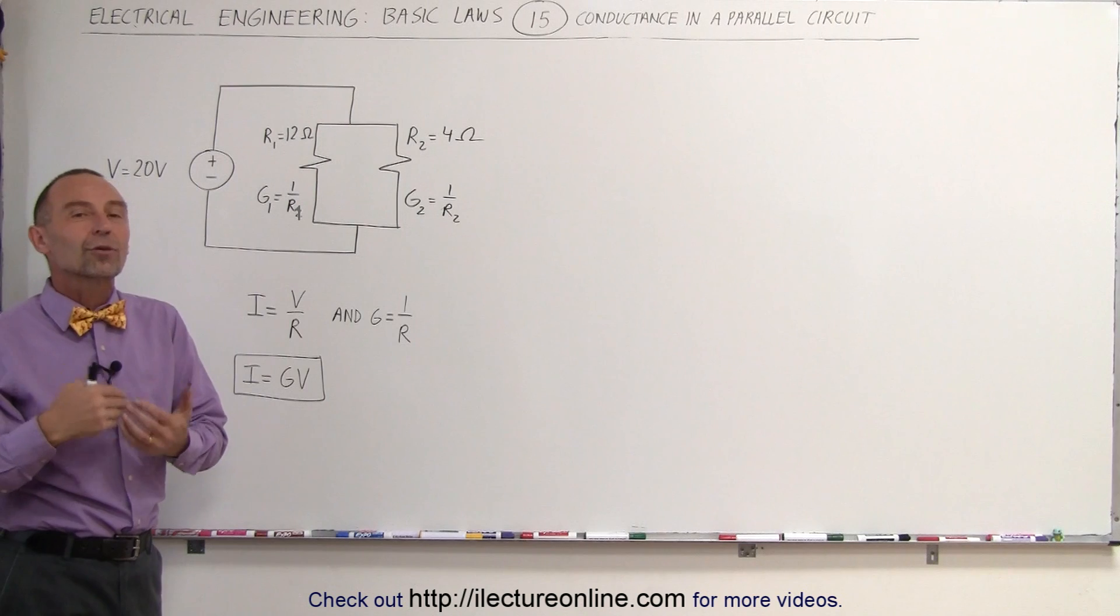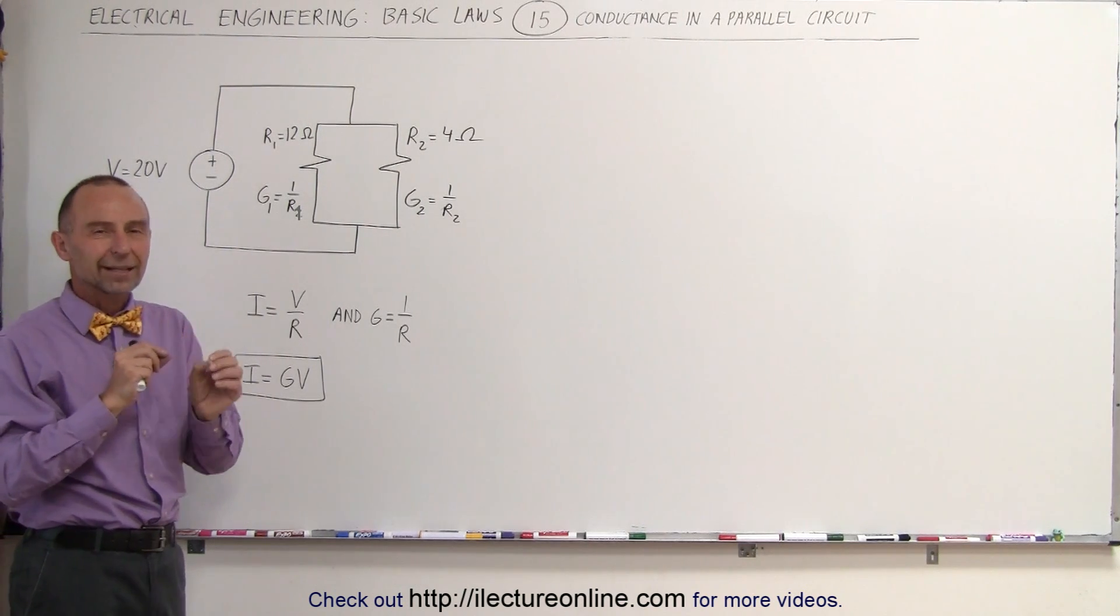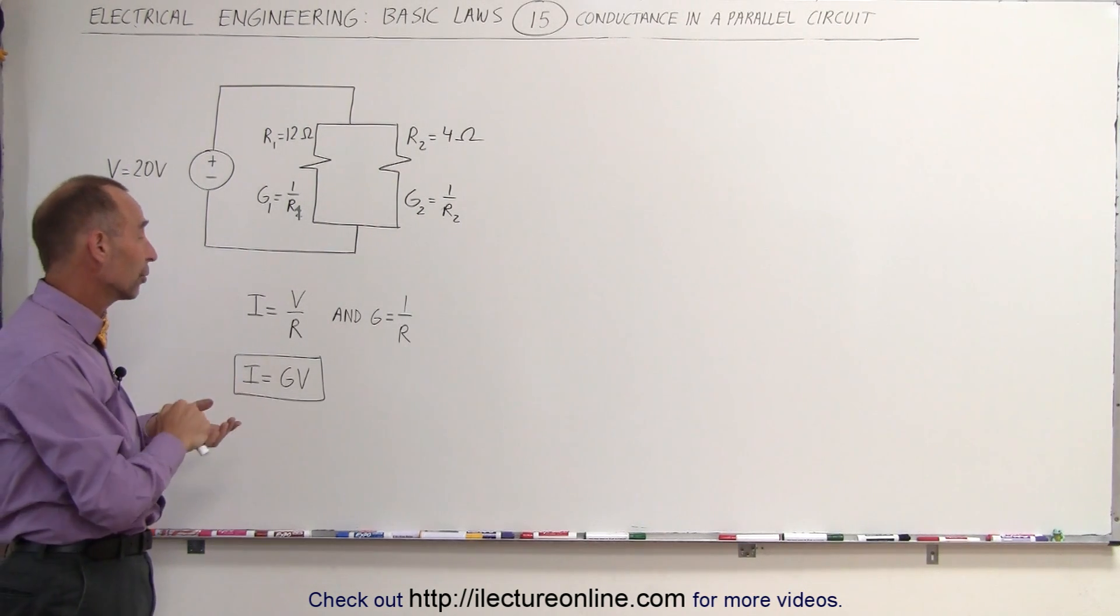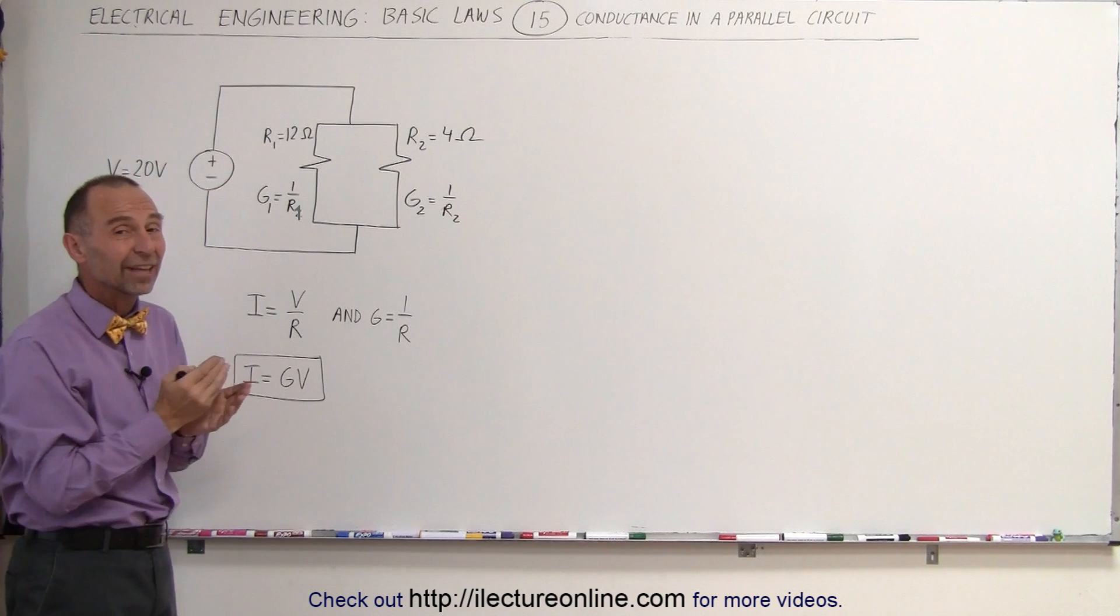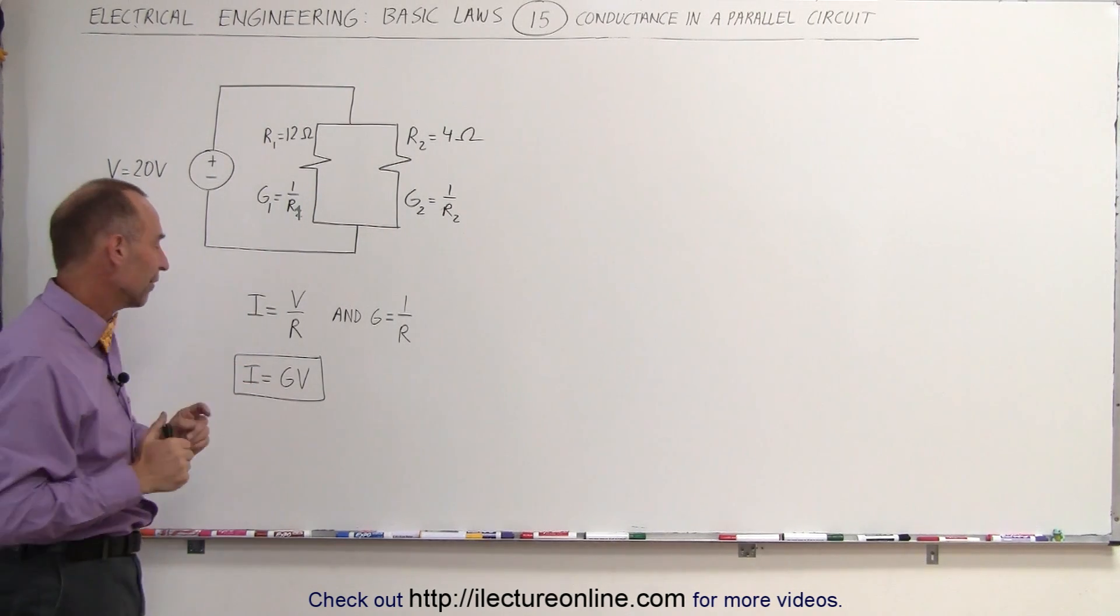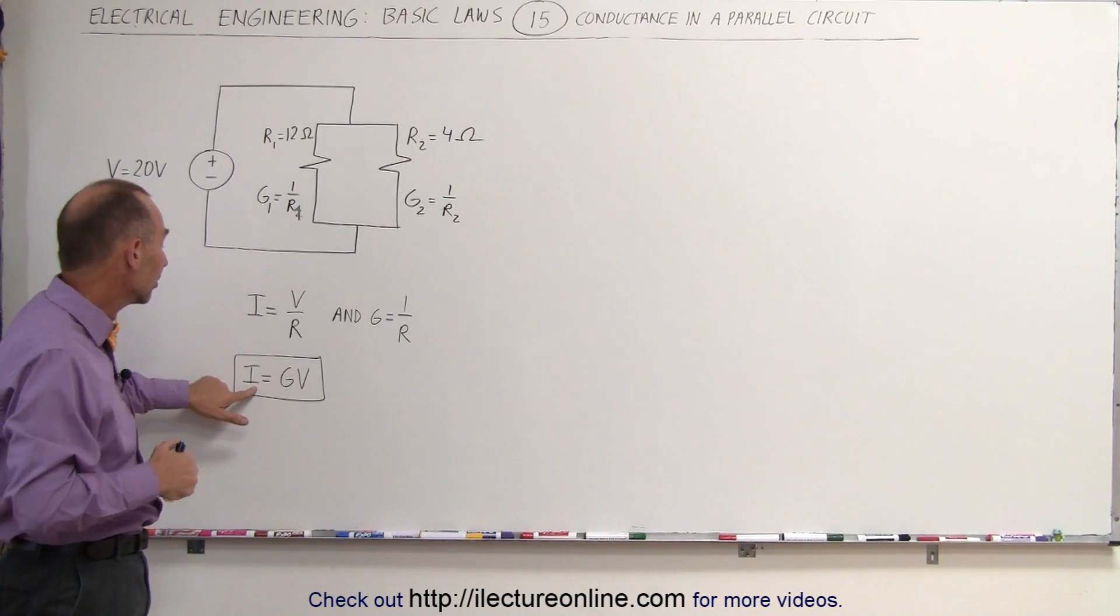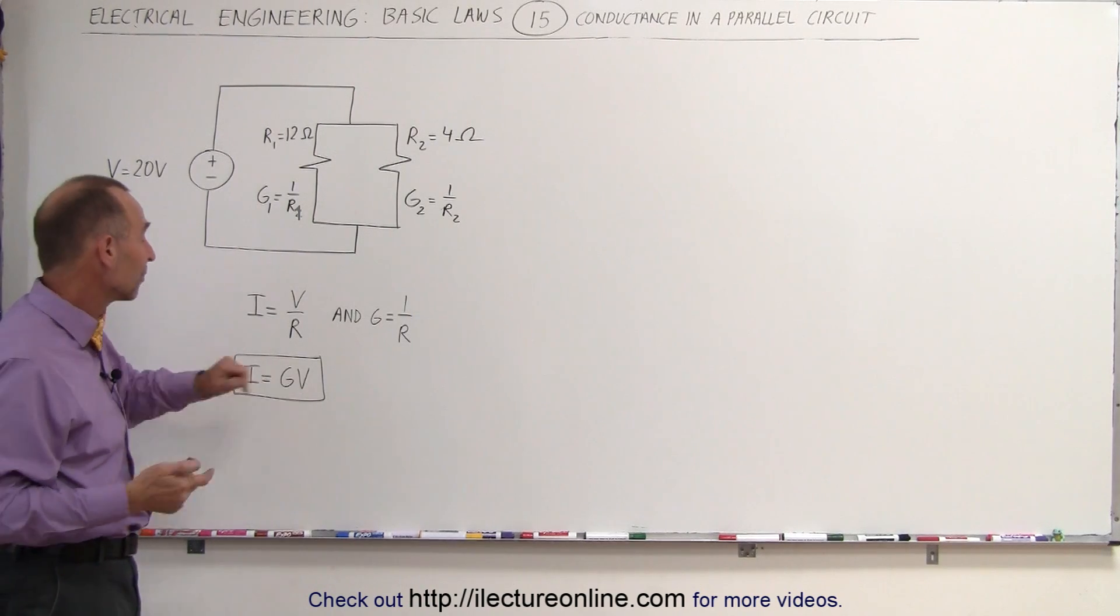Normally, when we use resistors and current, we have to come up with a complicated equation to find the current. But if we use conductance instead, it's actually really easy to find the current in each branch because it's simply the conductance times the voltage.